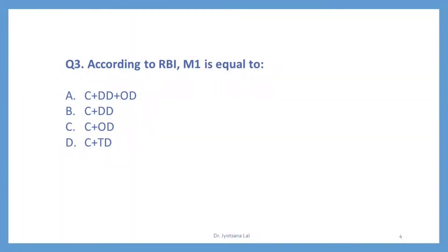According to RBI, M1 is equal to C plus DD plus OD. So the correct option is A. C is currency — it may be notes and coins. DD is demand deposit of public with banks. And OD is other deposits with RBI. M1 is the most liquid form of money supply.